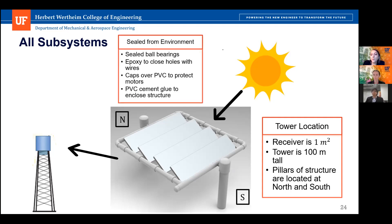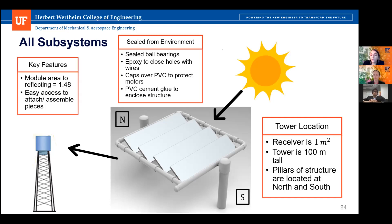Our entire system is sealed from the environment. This includes sealed ball bearings connecting the frame to the structure, epoxy to seal holes where wires exit the structure, and PVC cement glue to enclose the structure between PVC elements. There are also PVC caps over the pillars to enclose the motors. Key features: the module-area-to-reflecting-area ratio is 1.48, and the entire assembly has easy access to attach and remove pieces in case of damage.